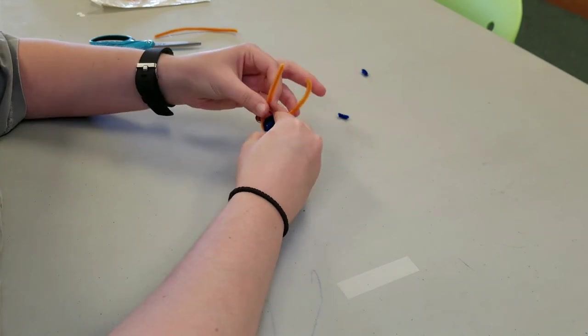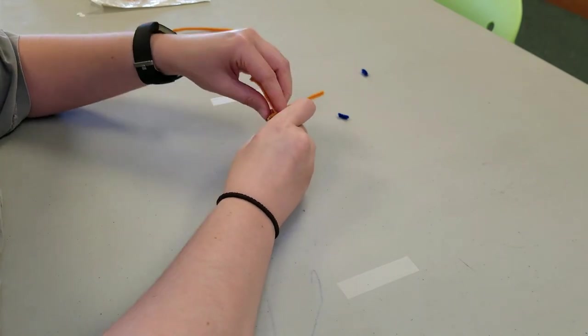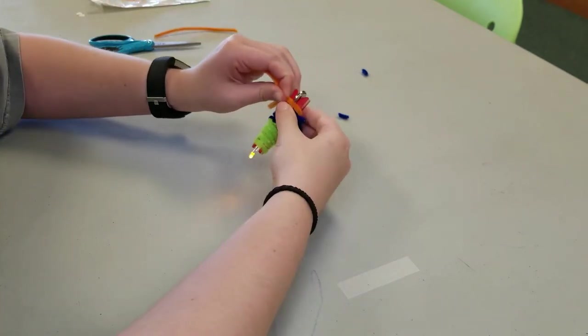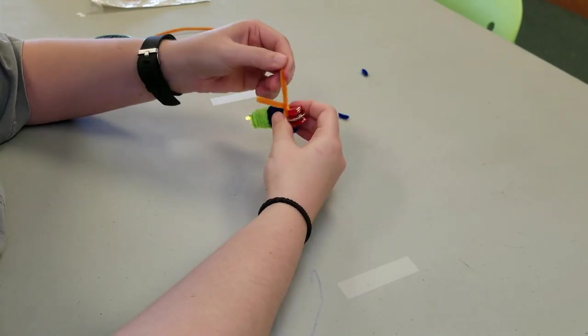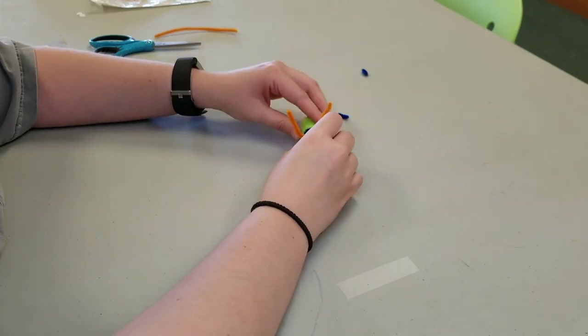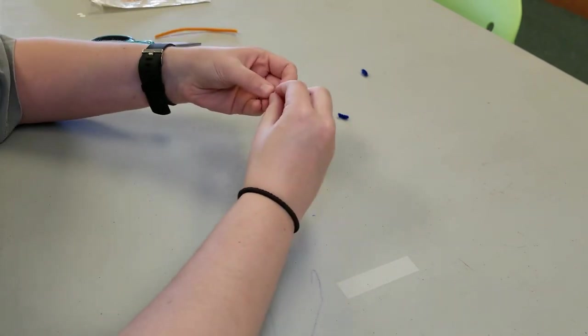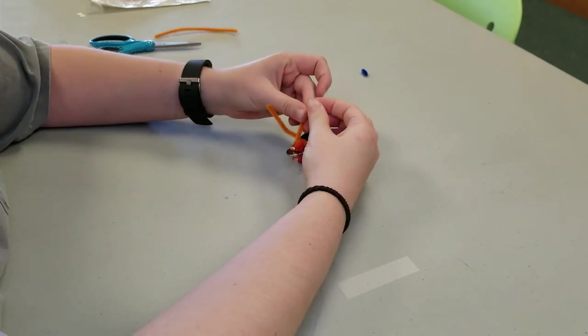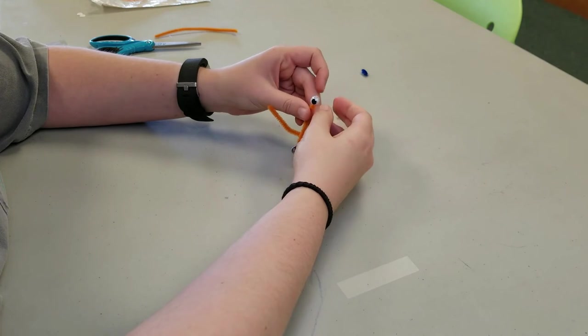We're going to use the last pipe cleaner and make some eye stalks. We're just going to twist it around the top. Then we'll take our googly eyes and put them at the end of the stalks.